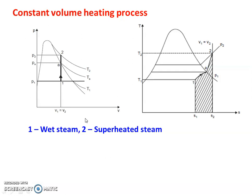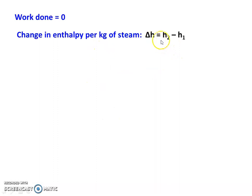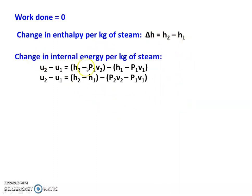In a pressure cooker, the vessel is closed. Due to heating inside the closed vessel, pressure and temperature increase, and the food grains are boiled. Initially it is wet steam, and finally it becomes superheated steam. The mass of the steam M equals volume V1 divided by X1·VG1. Since initially it is wet steam, we use X1·VG1. The work done equals 0 for a constant volume process. The change in enthalpy delta H equals H2 minus H1, and the change in internal energy per kg is U2 minus U1, where U2 equals H2 minus P2·V2 and U1 equals H1 minus P1·V1.